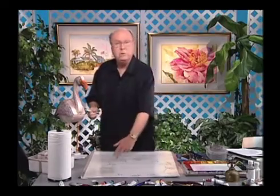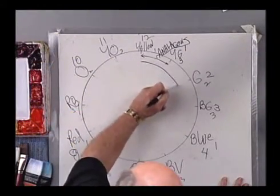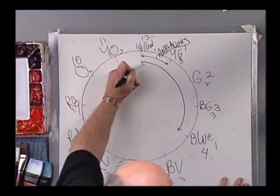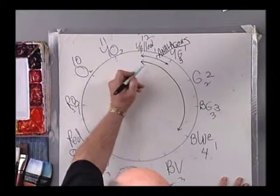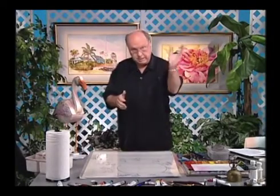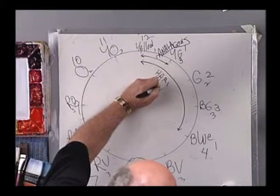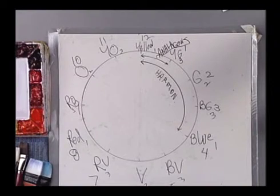Each color now has a position. You can describe where yellow is in relation to blue. Yellow's at twelve o'clock, blue's at four o'clock. Going from twelve o'clock down to four o'clock — that's four hours — we've included five colors. It takes five colors to make four hours worth of color time. The beginning color, one at the end, and the three in the middle. This is called a harmonious color scheme. Four hours of color time is a harmonious color scheme.